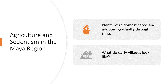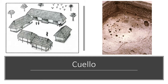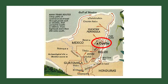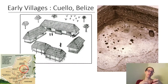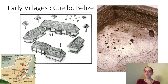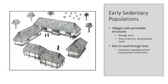This brings us to the question of what do early villages in the Maya region look like. We have evidence of early perishable houses — you're seeing here some images from the site of Coelho in Belize, which is located in the northern part of modern-day Belize and dates to about 2000 BCE. What we see is that early on around 2000 BCE, we have evidence of these low-lying house platforms. The image on the right shows the presence of post holes where the posts from pole and thatch houses would have been. There's also evidence of storage areas as well as tools used for the preparation of domesticated maize.